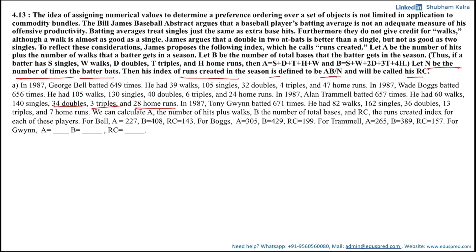For Bell, A is 227, B is 408, and RC is 143. For Boggs, A is 305, B is 429, and RC is 199. For Trammell, A is 265, B is 389, and RC is 167. For Gwynn, we still need to calculate A, B, and RC.